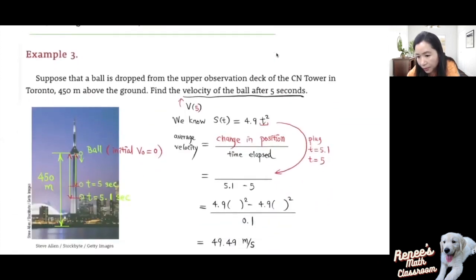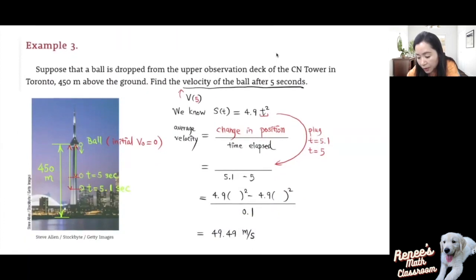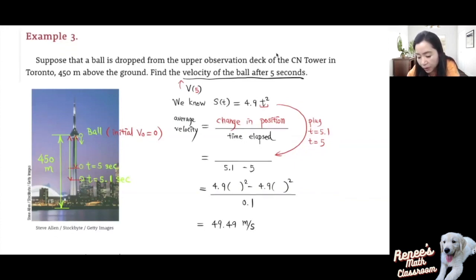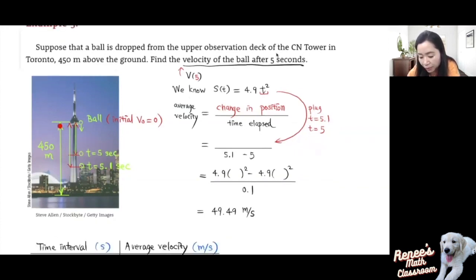Now in this next example, we're going to talk about instantaneous velocity. Suppose a ball is dropped from the upper observation deck of the CN Tower in Toronto, 415 meters above the ground. We want to find the velocity of the ball after 5 seconds. What will be the instantaneous velocity at that moment?